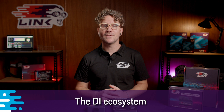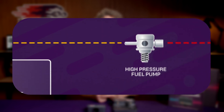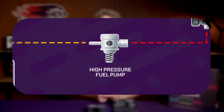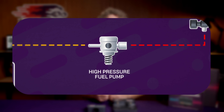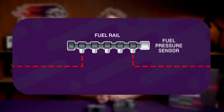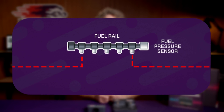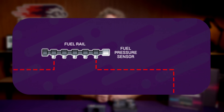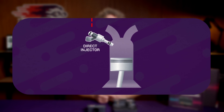The key components in the direct injection system are a low pressure fuel pump, which is typically in the fuel tank. This supplies fuel to the high pressure fuel pump, typically camshaft driven, which delivers fuel pressures 30 to 50 times greater than traditional fuel injection. The fuel is then supplied via high pressure fuel lines to the high pressure fuel rail, which stores the fuel. A pressure sensor mounted on the fuel rail measures the rail pressure and relays this to the ECU. The high pressure injectors, which are mounted on the fuel rail, deliver the fuel directly into the cylinder.